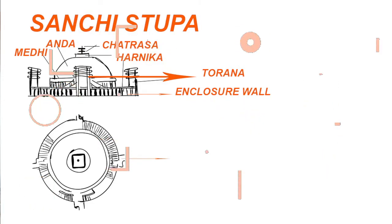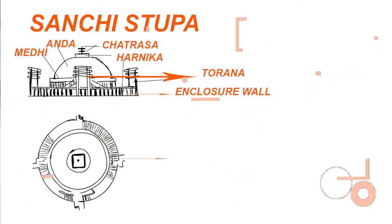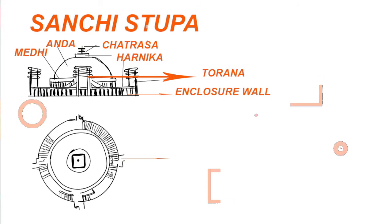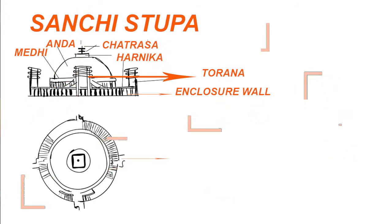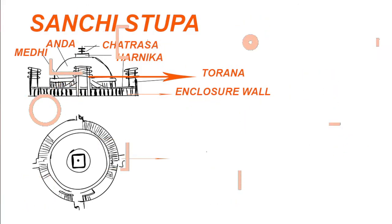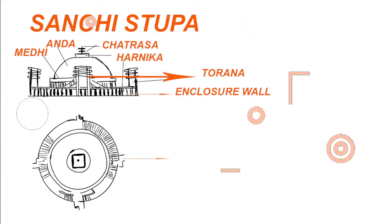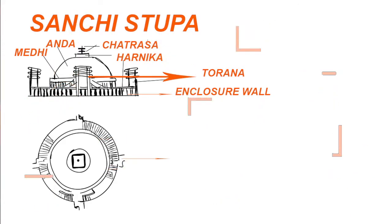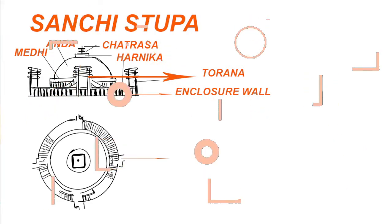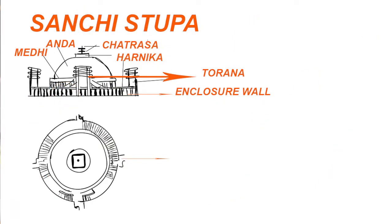There are two walkways where people take Parikramas, also called Pradakshina Patha — in English, the circumambulation path. The pillars and compound structure that line this circumambulation path are called Vedika. There are two walkways in Sanchi Stupa — one at the lower level and one at the second level. You enter the Stupa through a gate called a Torana.